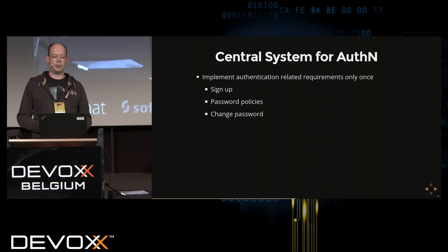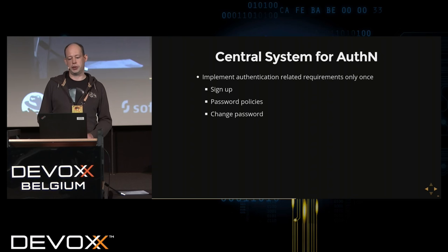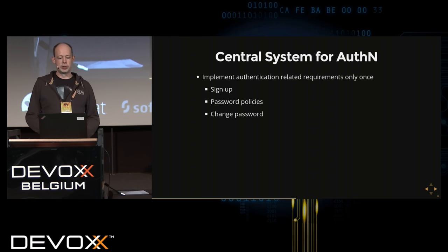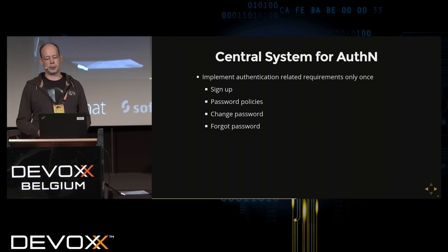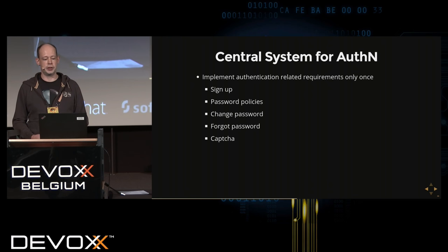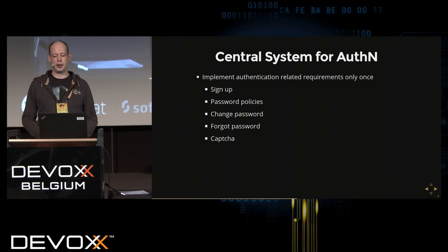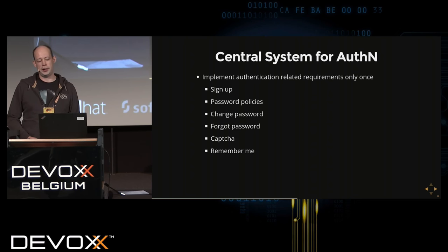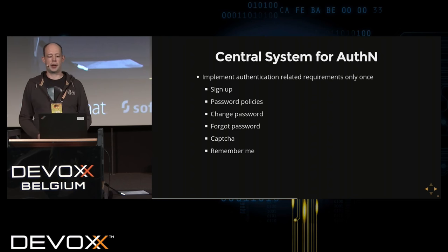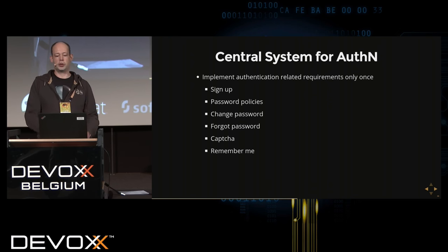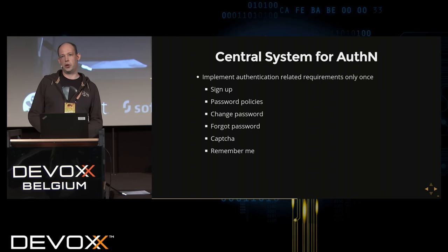All these features go into the domain of a central authentication system: a change-password function, a forgot-password function, brute-force detection when users enter incorrect credentials multiple times, and a remember-me function. This is only a small list of the total features you'd have to implement. They should all go into a central service responsible for all things regarding authentication — implemented once, or possibly bought off the shelf.